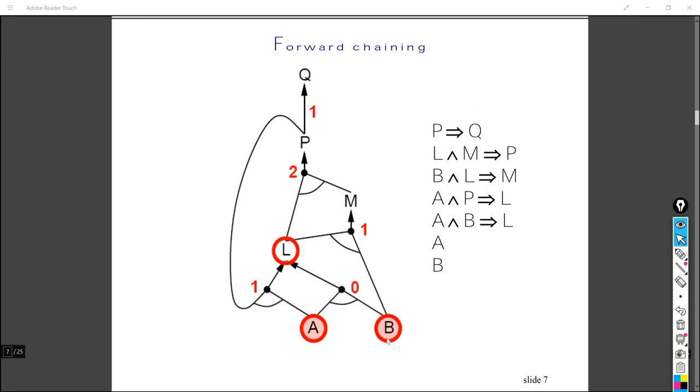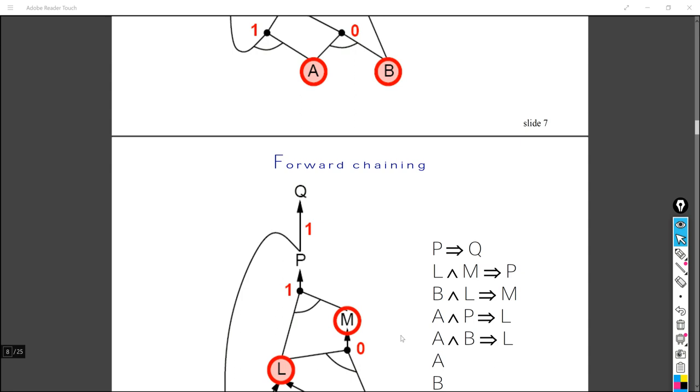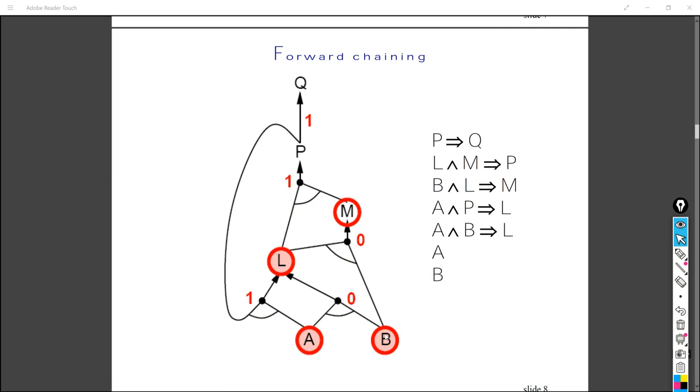And when we know both A and B are true here, we can actually denote that the value for L here is true as well. And we decrease this node from 1 to 0, since both of these nodes are known. So next, we just move forward, we let L be true, and since we know B is true as well, then we can derive M is true as well. And you can also see the node here decrease from 1 to 0, since L here is known as well.